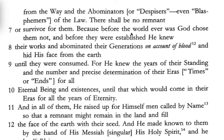'There shall be no remnant or survivor for them, because before the world ever was, Elohim chose them not; before they were established, he knew their works and abominated their generations on account of blood.' In the Book of Acts, we have the laws given by James — the decision that Gentiles coming to an understanding of Torah were to abstain from certain things: meat sacrificed to idols, things strangled, blood, and fornication. A lot of it had to do with staying away from idols and dietary restrictions.